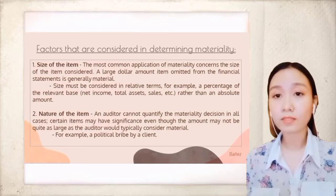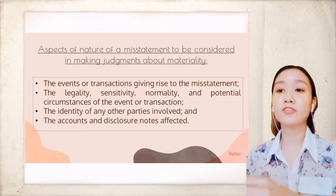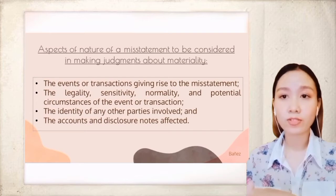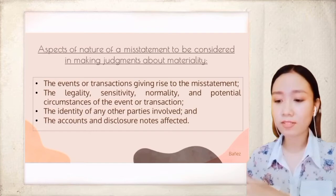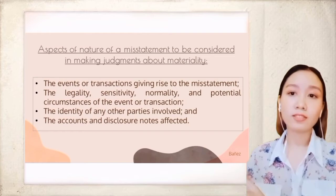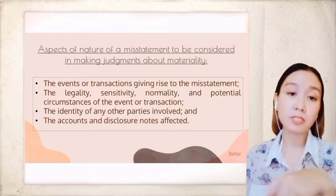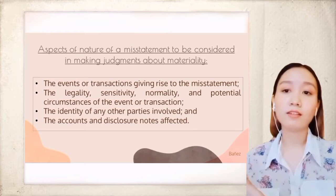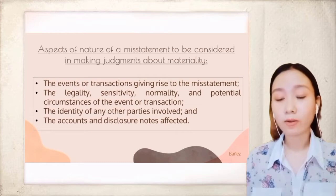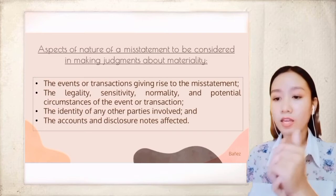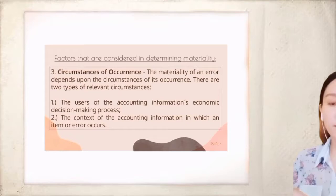There are aspects of the nature of a misstatement to consider when making judgments about materiality. First, the events or transactions giving rise to the misstatement — whether it is an unusual transaction or event that warrants investigation. Next, the legality, sensitivity, normality, and potential circumstances of the event or transaction, such as bribes, thefts, or incentives to perpetuate fraud. Also, the identity of other parties involved — such as personnel within the organization implicated in bribery or fraudulent acts — and the accounts and disclosure notes affected.